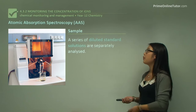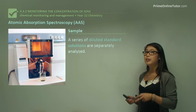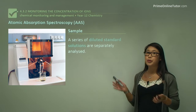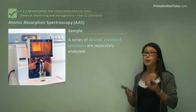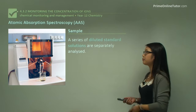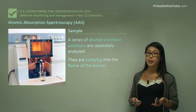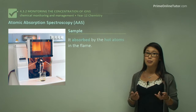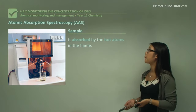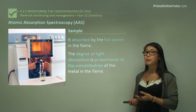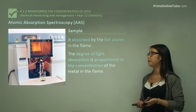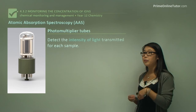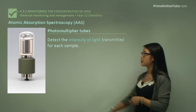When testing a sample, we first have to make up a series of diluted standard solutions of known concentrations, which we analyze separately in the AAS machine. First, we spray the sample into the burner, then light from the hollow cathode lamp is passed through it, and the sample absorbs the light at the specific frequencies. The degree of light absorbed is proportional to the concentration of the metal ions in the sample. The photomultiplier tube is used to detect the amount of absorption.